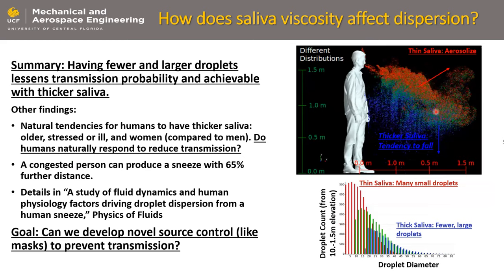To summarize — in this color plot after about five seconds, you can see the red droplets are all thin saliva; they're lofted up in the air and not falling much. The thicker droplets are tending to fall. Looking at droplet counts as a function of droplet diameter within the region susceptible to transmission, thin saliva leads to a lot of droplets that are lofted and prone to transmitting coronavirus. Versus thick droplets — very few of them, they're very heavy and much larger, so they end up falling.